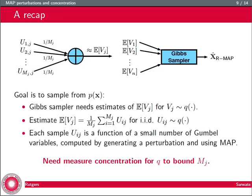I'll estimate vj using regular Monte Carlo. If I can sample iid from q, sampling mj uijs and averaging them, I get a good estimate of the expectation of vj. Each uij is a function of a small number of Gumbel random variables. I generate Gumbels, calculate the maximization via the fast MAP solver, do that mj times to estimate vj. Then I take all these estimates v1 through vn, shove them into my Gibbs sampler, giving me x hat r map. To make this computationally tractable, I need to bound mj—the number of samples needed.